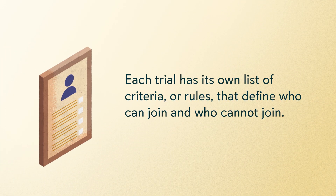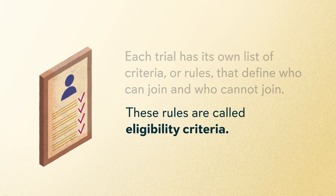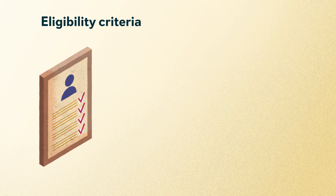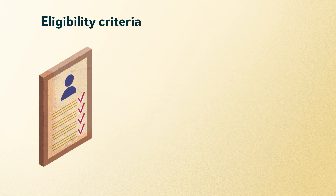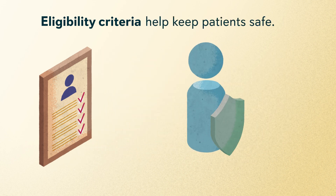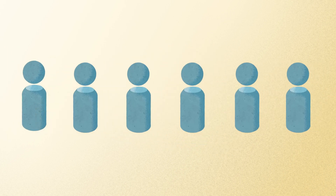Each trial has its own list of criteria, or rules, that define who can join and who cannot join. These rules are called eligibility criteria. Eligibility criteria are different for each trial and depend on the goals of the trial and the question the trial is trying to answer. Eligibility criteria help keep patients safe — for example, being in a trial could make some people's health conditions worse, so the criteria help identify these people before they start a trial.